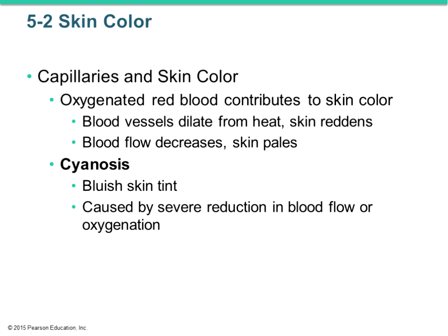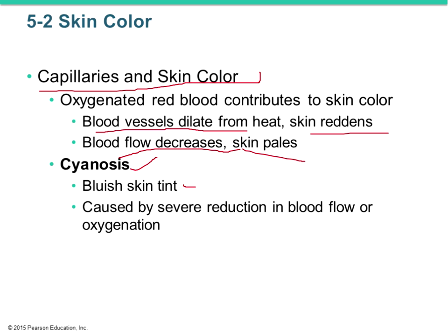Skin color can also be affected by capillaries that come very close to the epidermis. Oxygenated blood cells contribute a reddish color — if you're hot, blood vessels dilate closer to the skin giving a reddish hue. If you're cold, blood flow to the skin surface decreases and the skin pales. Cyanosis is an extreme case where a bluish skin tint results from severe reduction in blood flow, oxygenation, or dehydration.